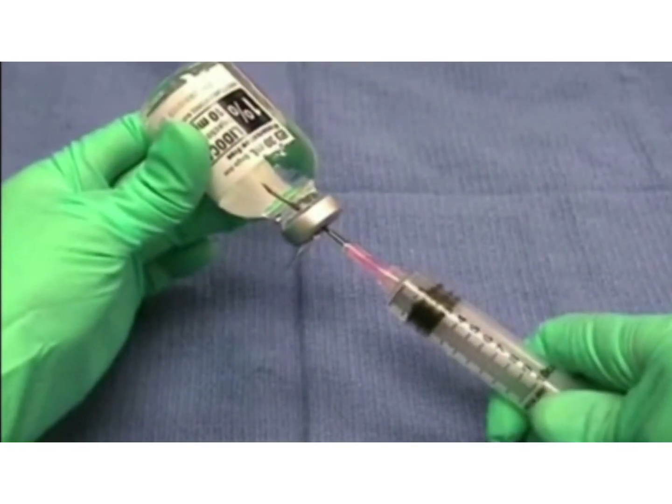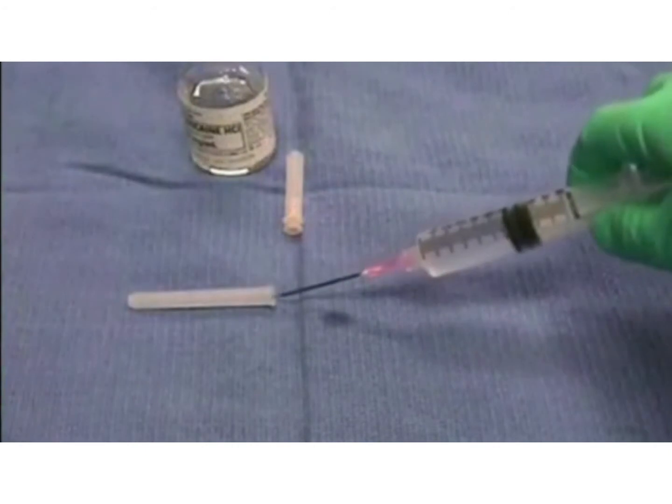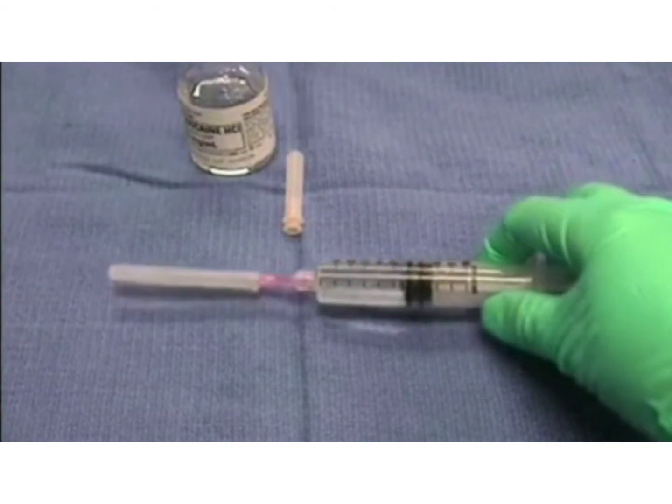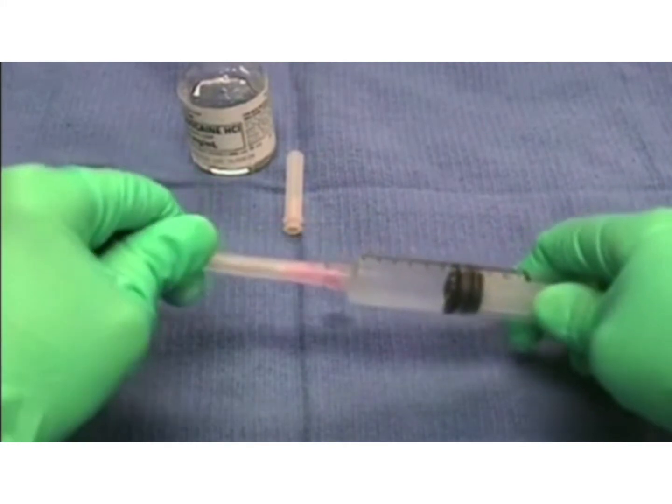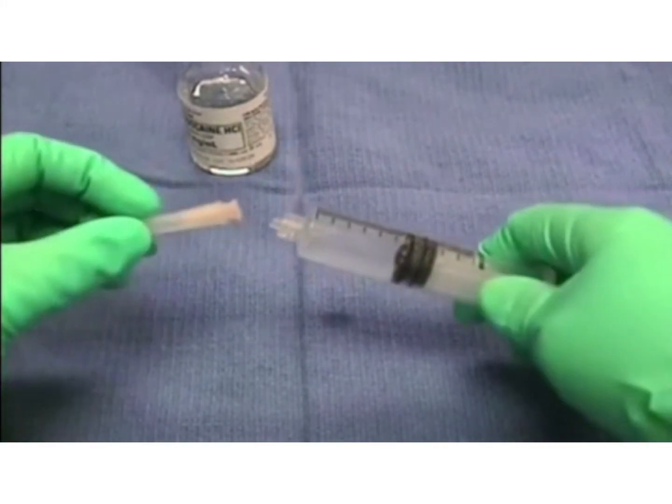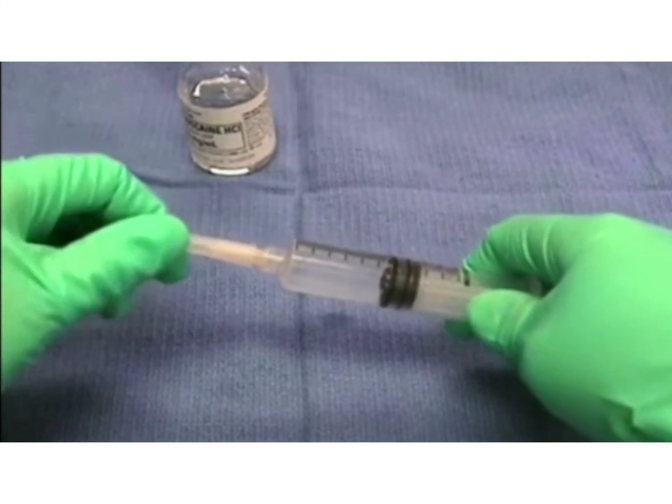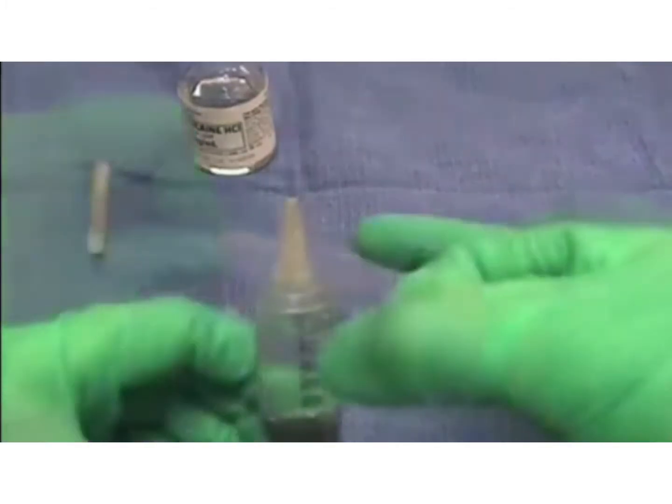Carefully recap your needle using the single-handed scoop method to prevent needle stick injury. Exchange for a smaller 25 or 30 gauge needle, and push out any air bubbles by directing the needle upwards towards the ceiling.